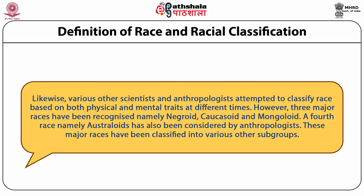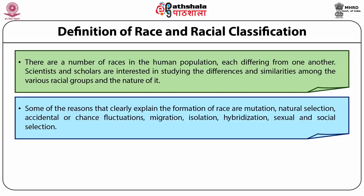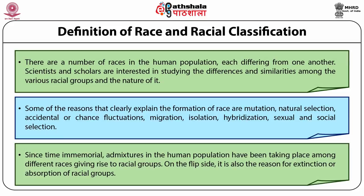There are a number of races in the human population, each differing from one another. Scientists and scholars are interested in studying the differences and similarities among the various racial groups. Some of the reasons that clearly explain the formation of race are mutation, natural selection, accidental or chance fluctuations, migration, isolation, hybridization, and sexual and social selection. Since time immemorial, admixtures in the human population have been taking place among different races, giving rise to new racial groups, and it is also the reason for the extinction or absorption of racial groups.